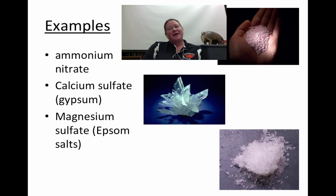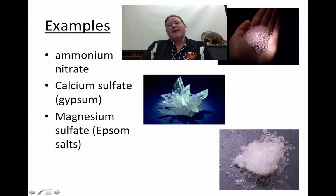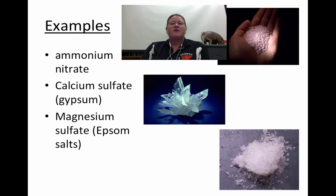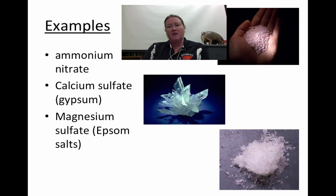Some examples of ternary ionic compounds that contain polyatomic ions you may be familiar with include these compounds. In the palm of this hand, you see some ammonium nitrate, which is frequently used as a fertilizer. It's very rich in nitrogen, since ammonium has NH4 and nitrate is NO3 — a really good source of nitrogen, which helps plants grow. Unfortunately, ammonium nitrate has also been used in some very tragic events, like the Oklahoma City bombings and many terrorist bombings in other countries.